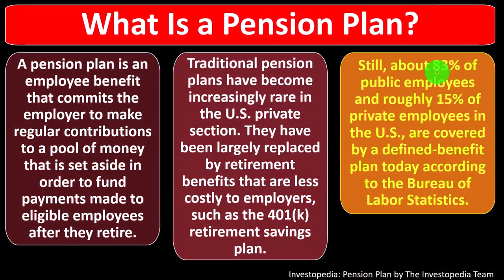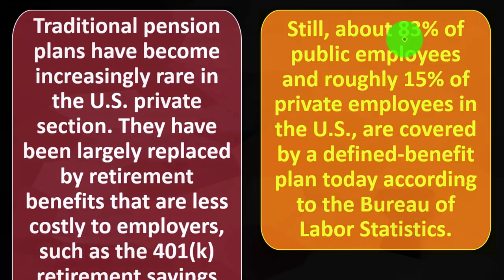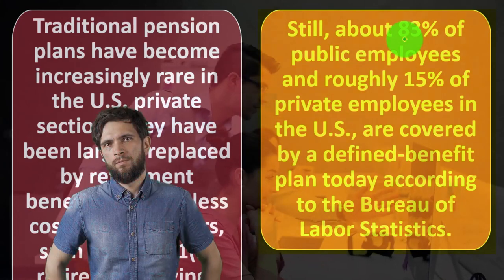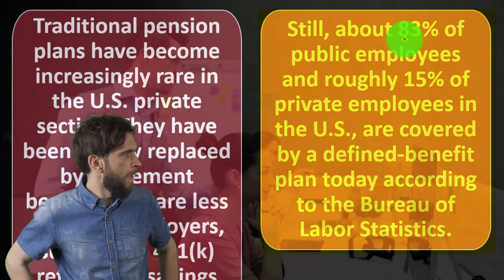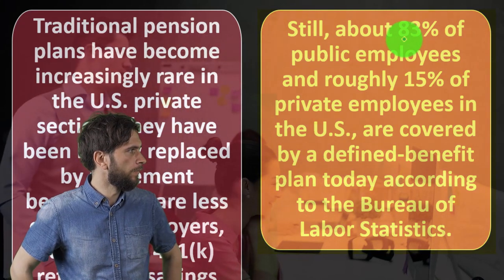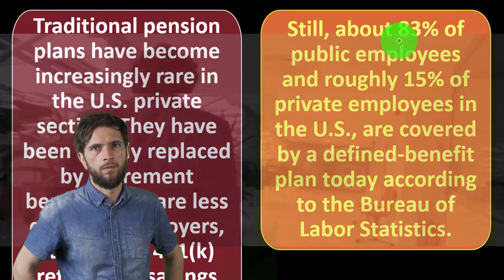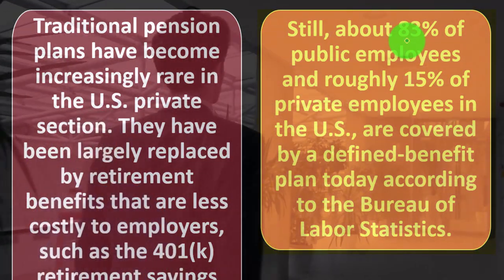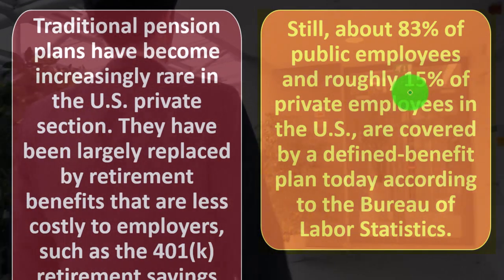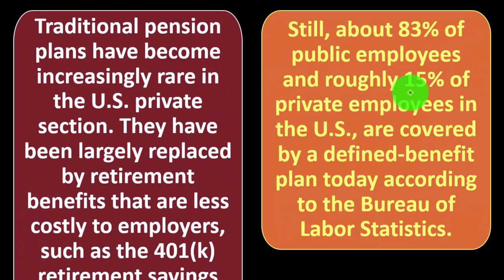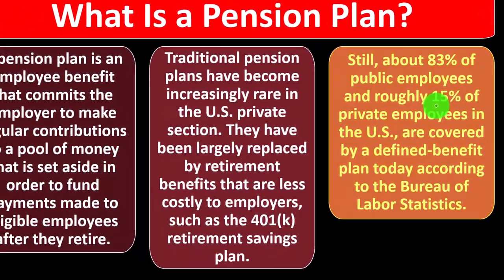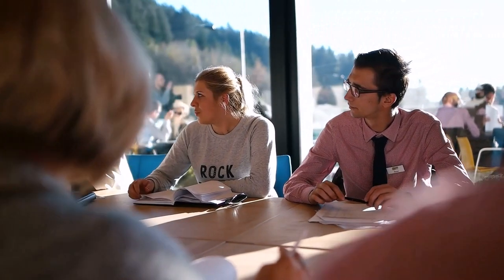Coverage is much higher on the public employee side, and those benefits are generally better guaranteed. On the public side, employees used to earn less but get better benefits — but now public unions seem to get both higher pay and better benefits. Pension negotiations with public employees are paid by taxpayers, whereas private sector companies must ensure deals are financially viable long-term.